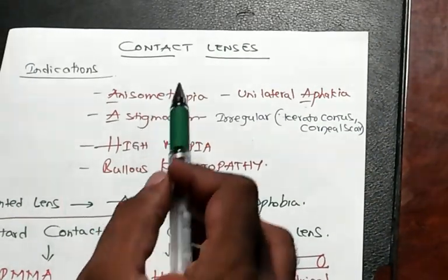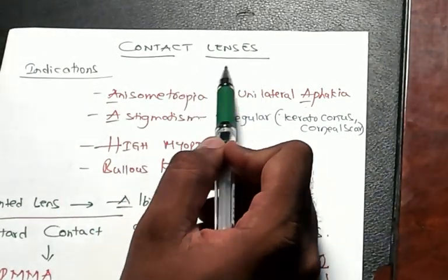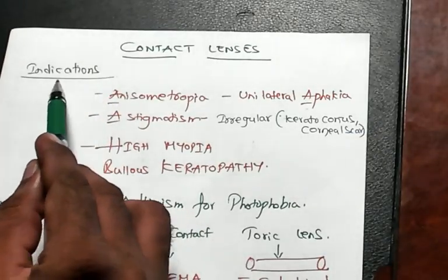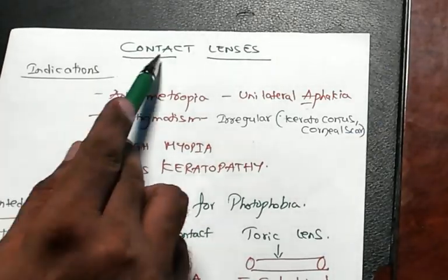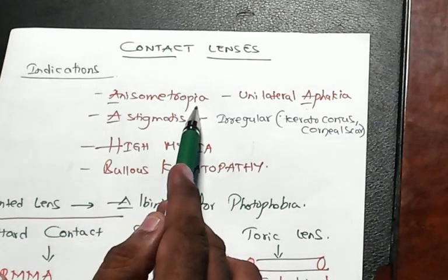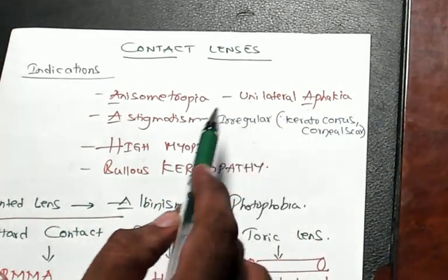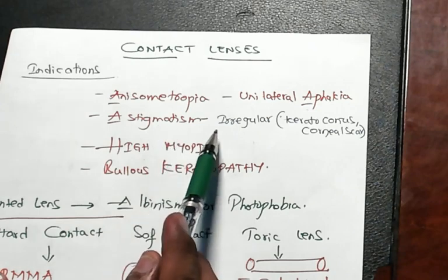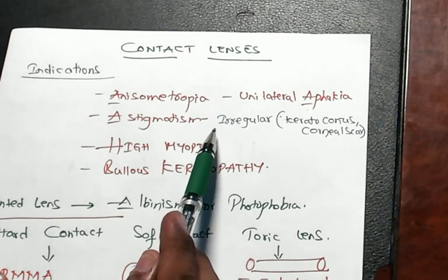Contact lenses. What are the indications of the contact lens? Anisometropia, unilateral aphakia, astigmatism especially irregular astigmatism.